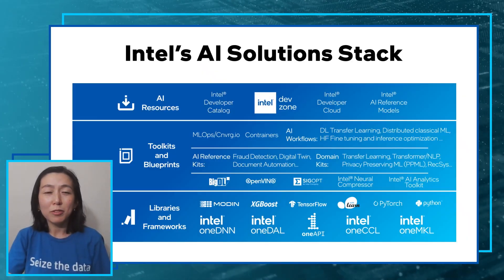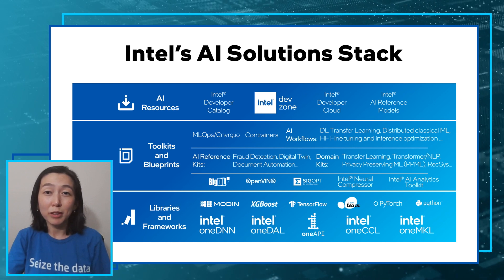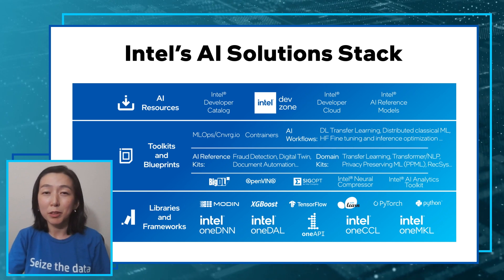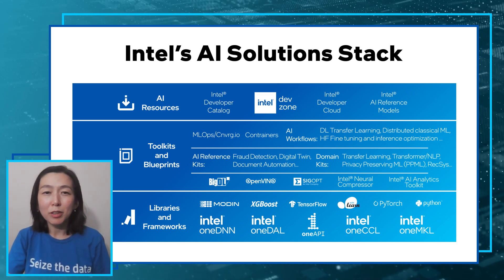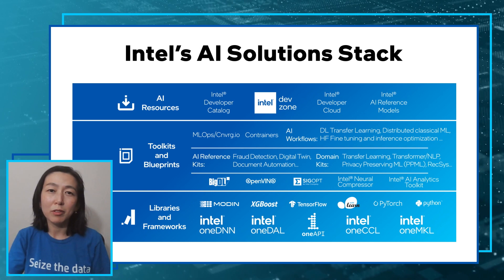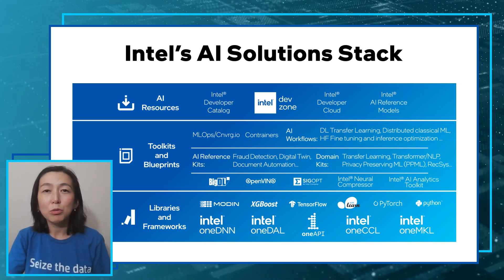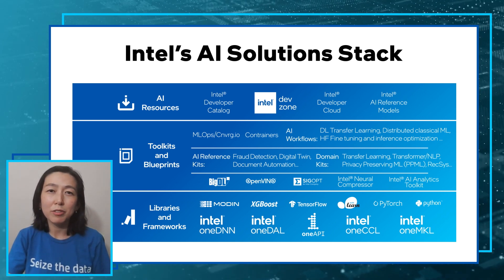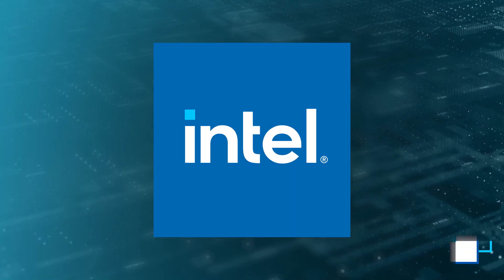Did you know that Intel offers a wide range of software, tools, and solutions to simplify developing and deploying AI applications for developers? Offerings range from lower-level framework and library implementations to higher user-level resources like developer catalogs, articles, and reference models. This video briefly covers and gives you a general idea about each component. You can get more detailed information by following the links in the description or watching related videos in our series.